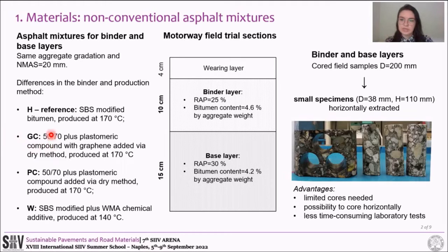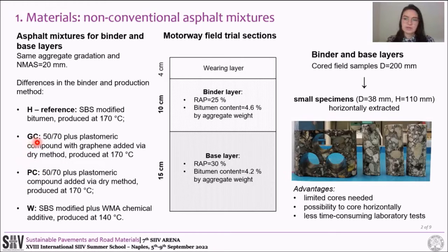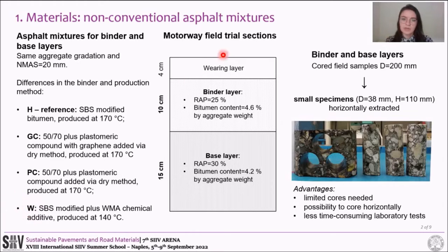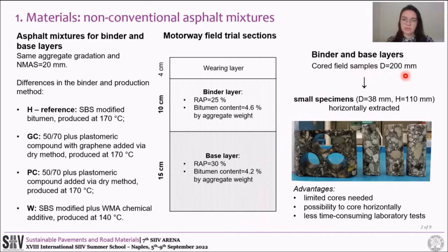Two hot-mixed asphalts, named GC and PC, were produced using bitumen and plastomeric compounds added via the dry method. Specifically, the GC compound was made of recycled plastic and a small percentage of graphene. A warm mixed asphalt, named W, was produced at 140 degrees Celsius using SBS-modified bitumen and a chemical additive. Field trial sections were constructed employing these mixes, and then cored samples with a diameter of 200 mm were extracted from the pavement.